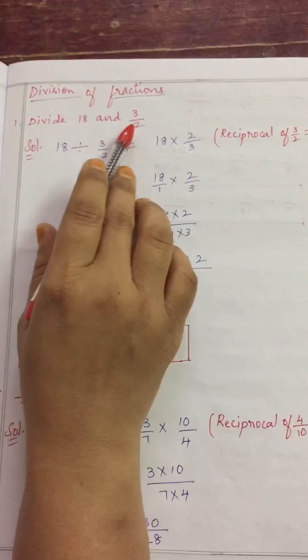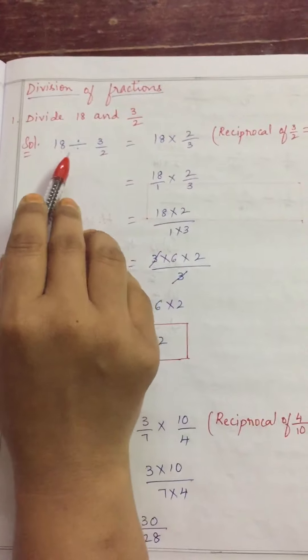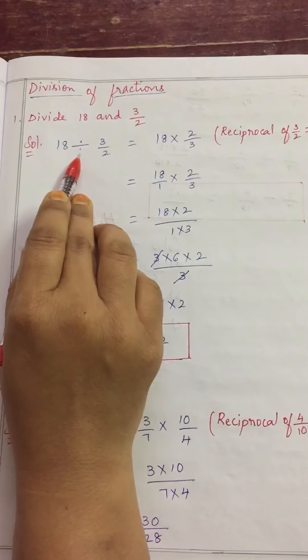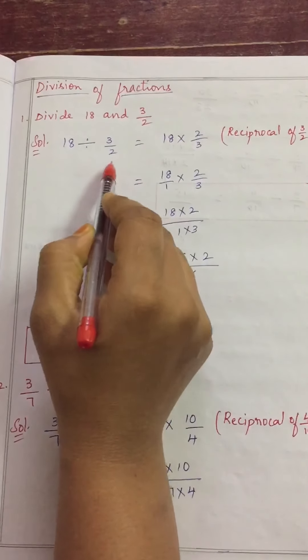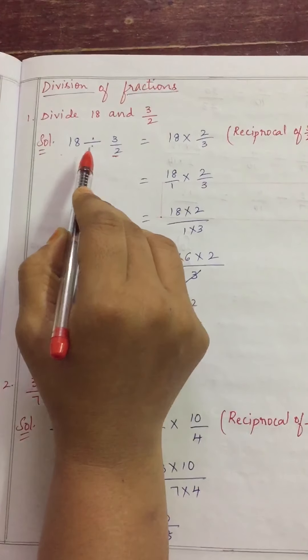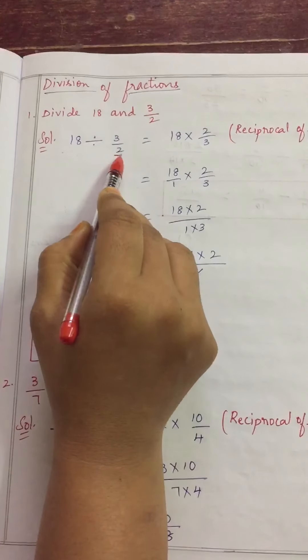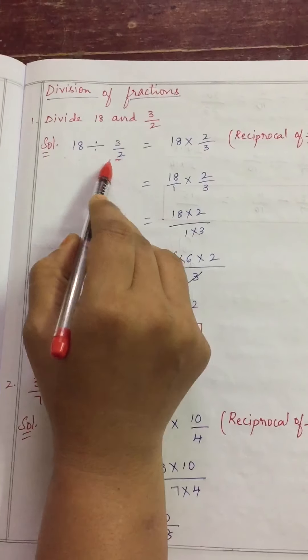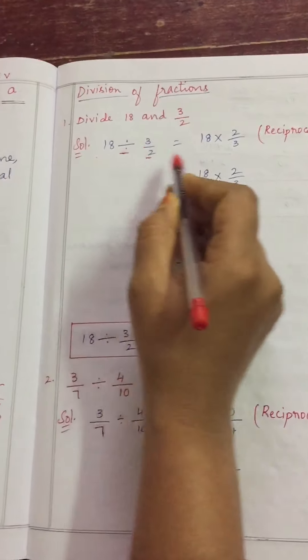Now, first question divide 18 and 3 by 2. So, division symbol you know 18 divided by 3 by 2. We need to take the reciprocal of this. To divide one number and one fraction or two fractions, this division becomes multiplication.